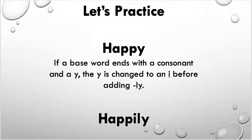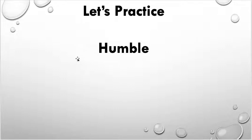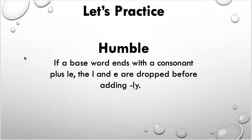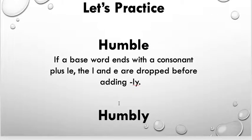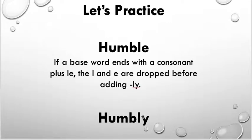All right, let's take a look at another word: 'humble.' I remember the rule that if a word ends with a consonant and '-le,' I need to change the spelling. If a base word ends with a consonant — which is 'b' — plus '-le,' the '-le' is dropped before adding the '-ly.' Go ahead and see if you can think of how the spelling of this word will change. If you said you would drop the '-le' and add the '-ly,' you are correct. The new word would be 'humbly.'